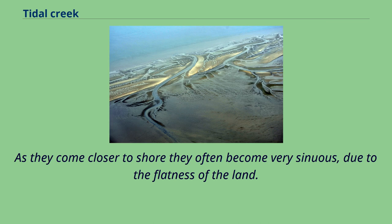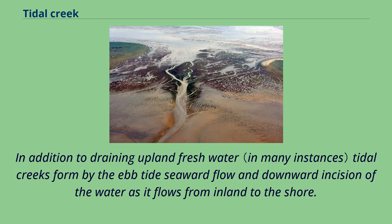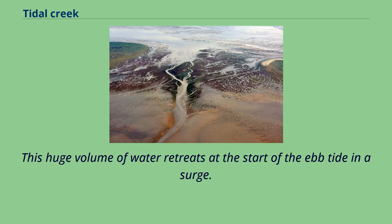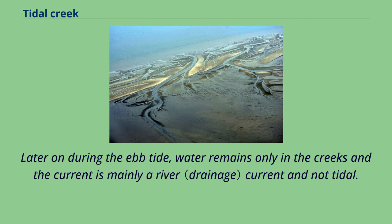As they come closer to shore they often become very sinuous, due to the flatness of the land. In addition to draining upland fresh water, tidal creeks form by the ebb tide's seaward flow and downward incision of the water as it flows from inland to the shore. At high tide large areas are covered with water, and this huge volume of water retreats at the start of the ebb tide in a surge. Later on during the ebb tide, water remains only in the creeks and the current is mainly a river current and not tidal.